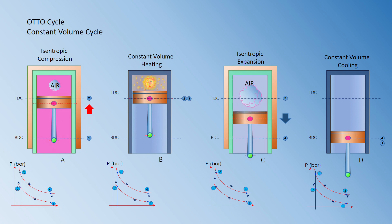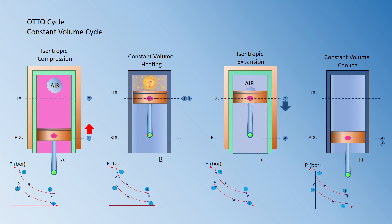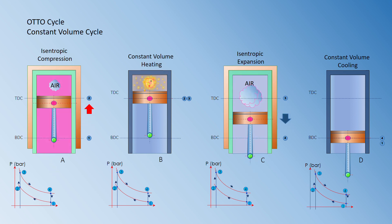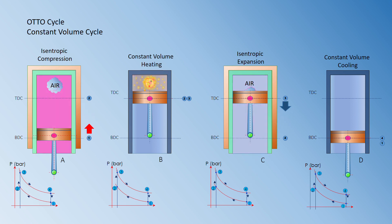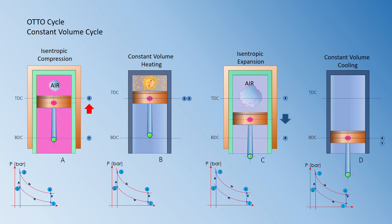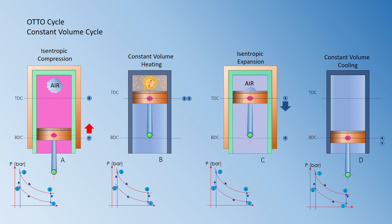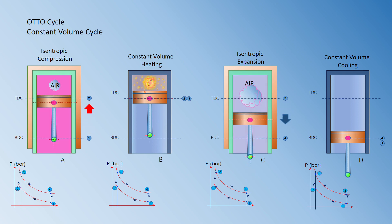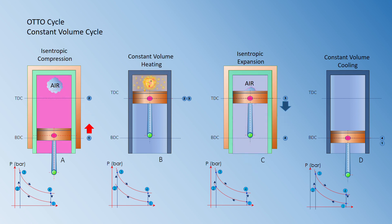Process 1 to 2 is a compression process with work input. In the isentropic expansion process (3 to 4), the air expands and pushes the piston downward, creating work output. Since this is isentropic, there is no heat flow.